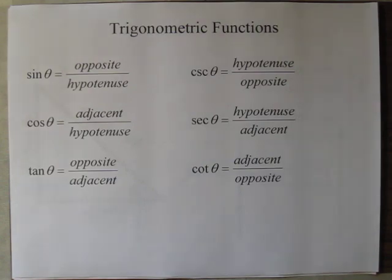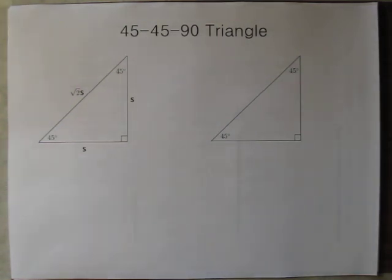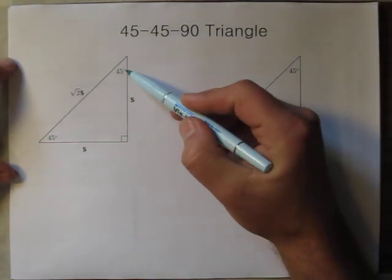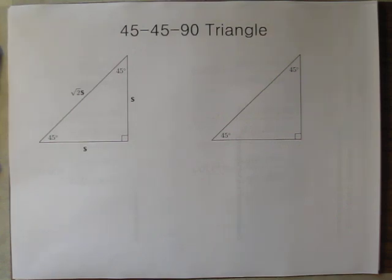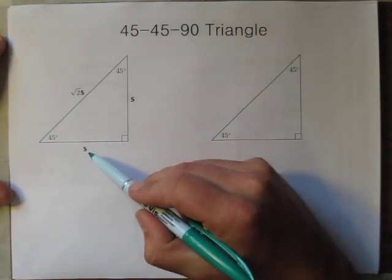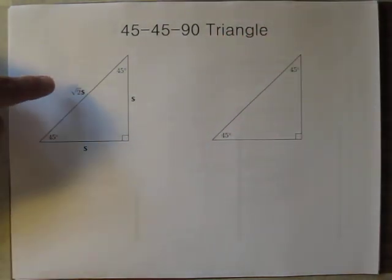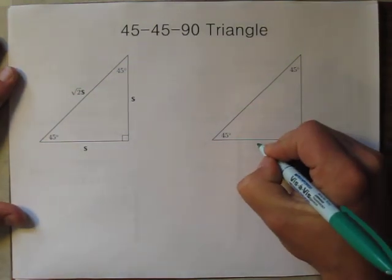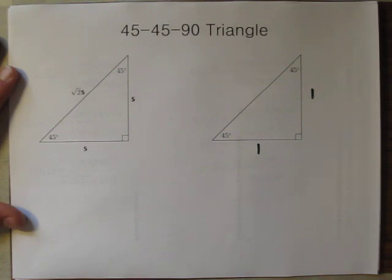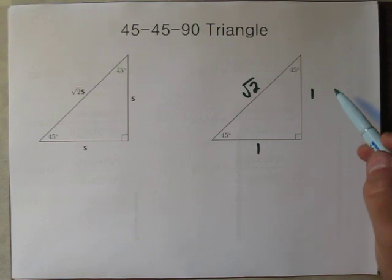There are two special triangles you learned about in geometry. The 45-45-90 triangle is the right triangle that has 45 and 45 degrees as the other two non-right angles. The relationship between the sides is that each leg is the same length, which makes sense because they're opposite the same angle. And the hypotenuse is √2 times the length of the leg. So if this leg measured 1, this one would also measure 1.